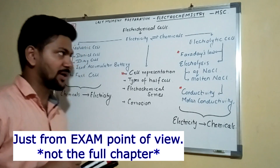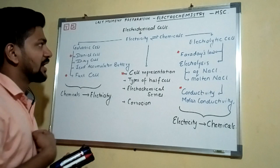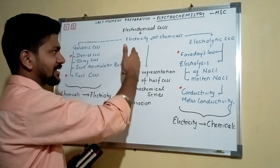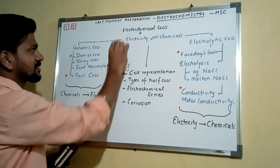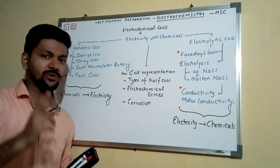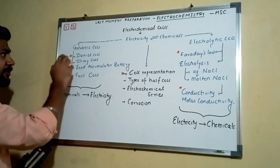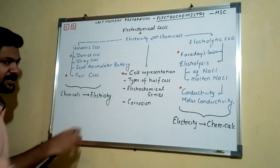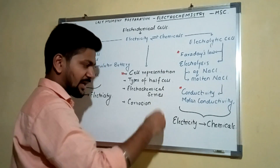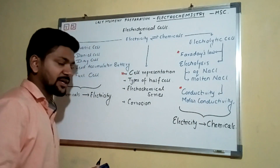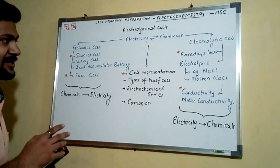From an exam point of view, let's start with electrochemistry. Electrochemistry is a part of physical chemistry or electro-analytical chemistry where we study the interconversion between electricity and chemicals — electricity giving you chemicals, and chemicals giving you electricity. For this conversion, you require a cell called an electrochemical cell. There are two types: electrolytic cell and galvanic cell. In a galvanic cell, chemicals give you electricity. In an electrolytic cell, electricity is used to produce chemicals.